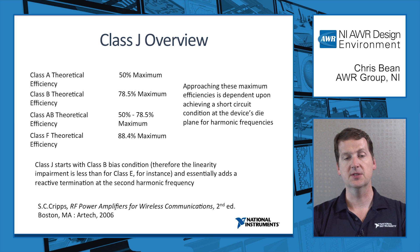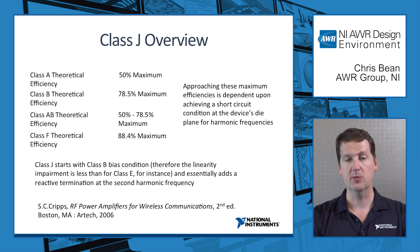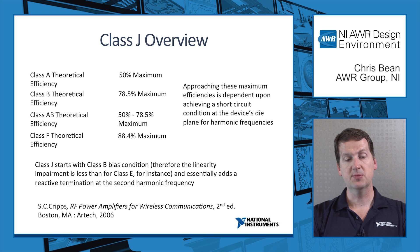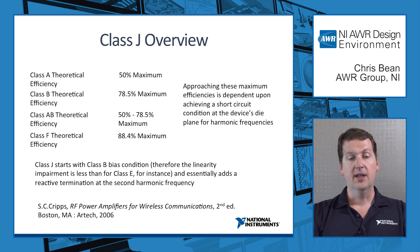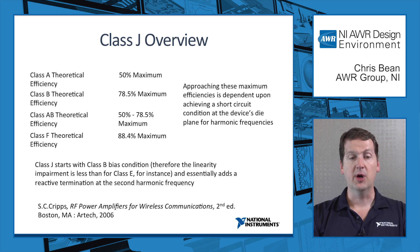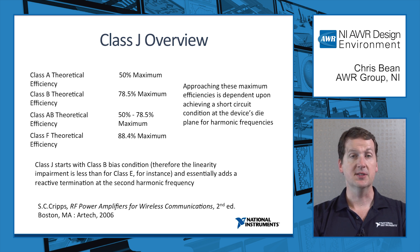What we see in the literature is typically 88.4% maximum when you have the second and third harmonic. Class J was introduced by Dr. Steve Cripps in 2006. It starts with the Class B bias condition and essentially adds reactive termination at both the fundamental and the second harmonic frequency. It therefore has less linearity impairment than something like Class E, which is essentially a switch mode operation.